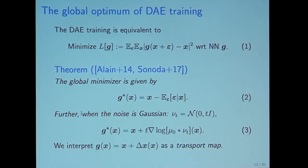This is our first contribution. The denoising autoencoder has a global optimal map. The denoising autoencoder training is equivalent to the minimization program in equation one. LG means we input x plus epsilon to neural network G, measure the squared error, and take expectation with respect to x and epsilon. This is the meaning of L. The denoising autoencoder training is equivalent to minimization of this LG.